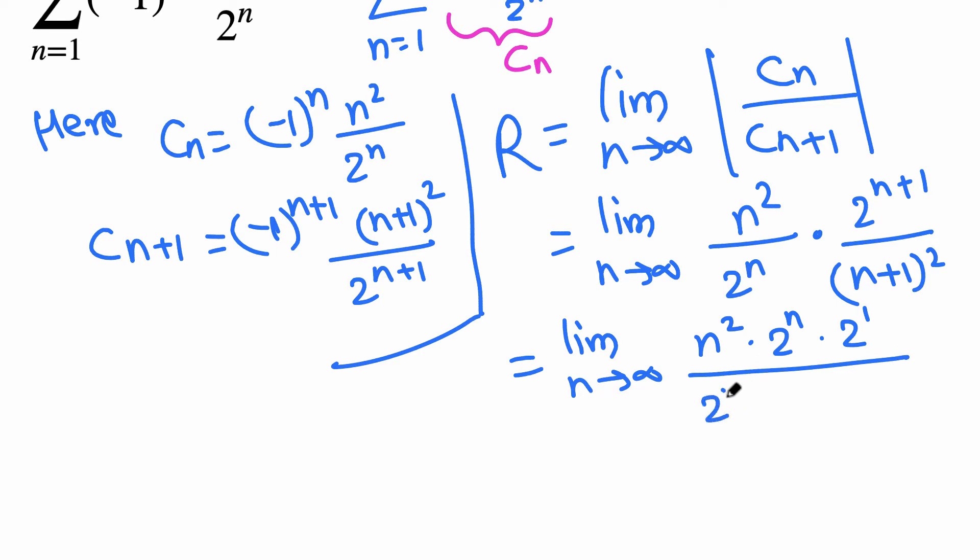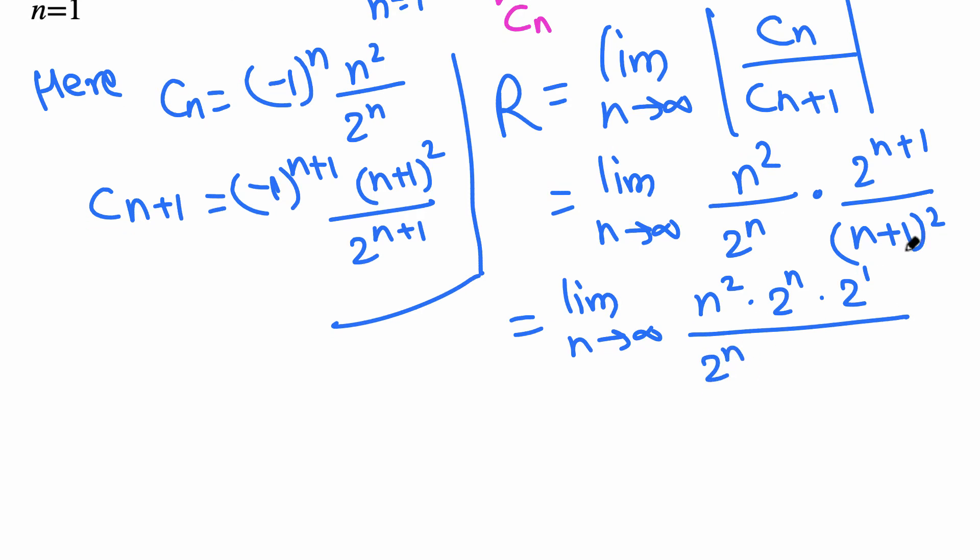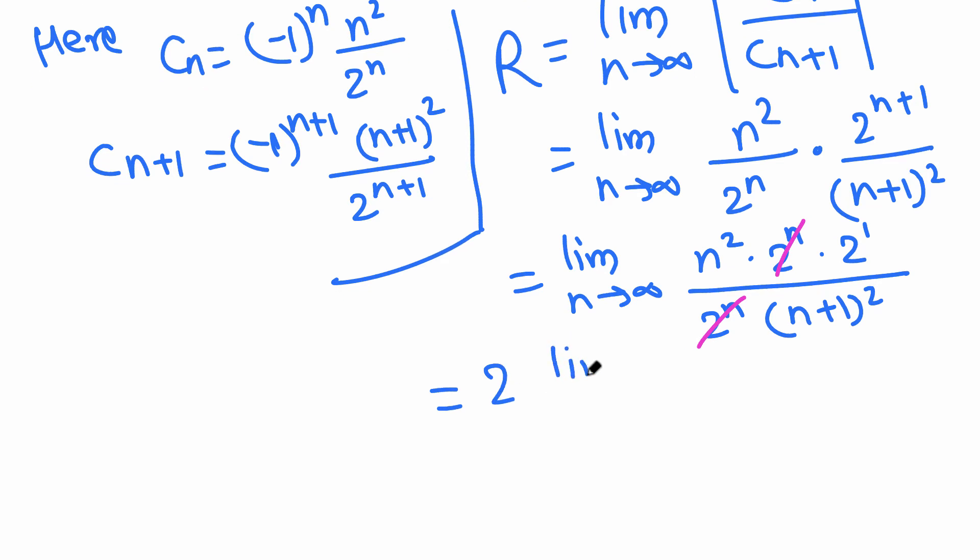On the bottom we got 2 to the n and n plus 1 squared. We can multiply n plus 1 by itself but that's not needed. Now we can see we can cancel these 2 to the n terms.